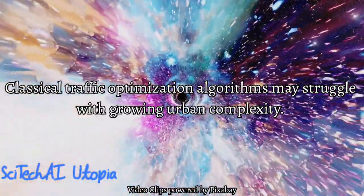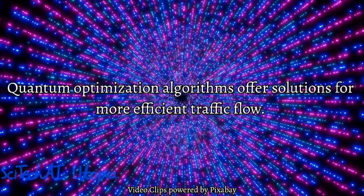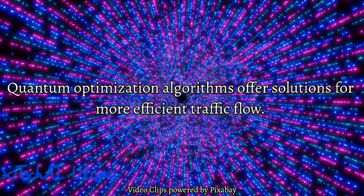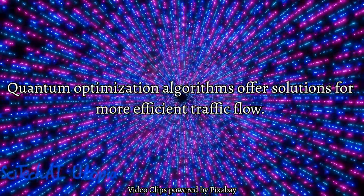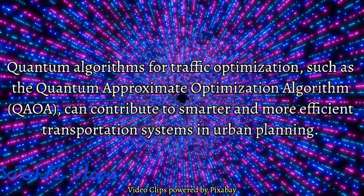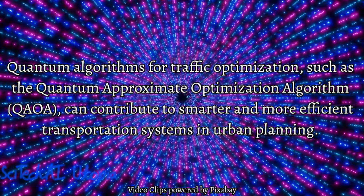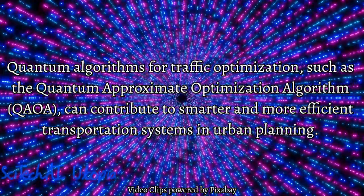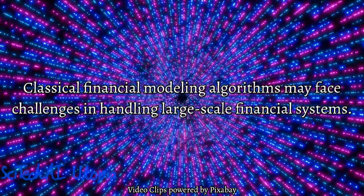Number 25: Traffic Optimization. Classical algorithms for traffic optimization often rely on heuristics and approximations. As urban areas grow, classical methods may struggle to handle the increasing complexity of traffic patterns. Quantum algorithms can provide solutions for efficient traffic flow optimization. Quantum optimization algorithms, such as the quantum approximate optimization algorithm, can address complex optimization problems inherent in traffic management, contributing to the development of smarter and more efficient transportation systems in urban planning.